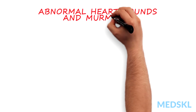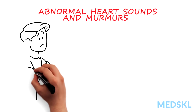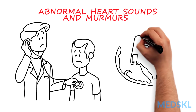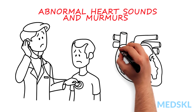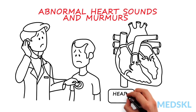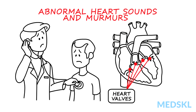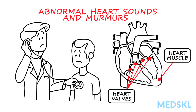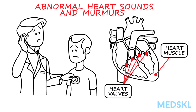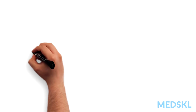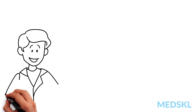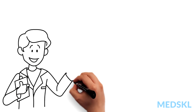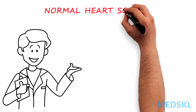Abnormal heart sounds and murmurs often reflect important underlying structural heart disease, a term that refers to problems with either the heart valves or the heart muscle, or sometimes both. But before we tackle abnormal heart sounds and murmurs, we should first review briefly the normal heart sounds.